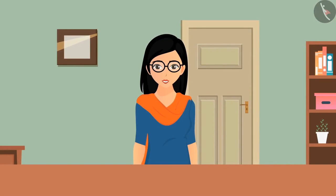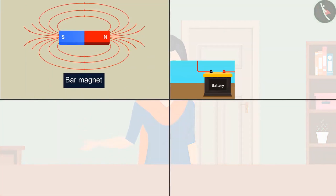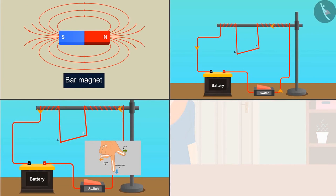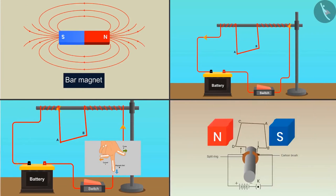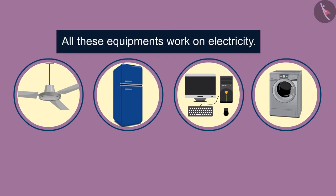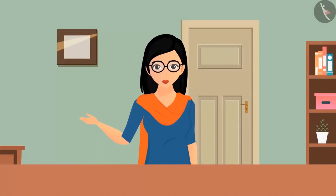In our last video we understood what happens when a current carrying conductor is placed in a magnetic field. We also understood Fleming's left-hand rule and the working principle of electric motor and its applications like fan, refrigerator, computer, and washing machine. All these equipments work on electricity. Have you ever thought about how we generate electricity?